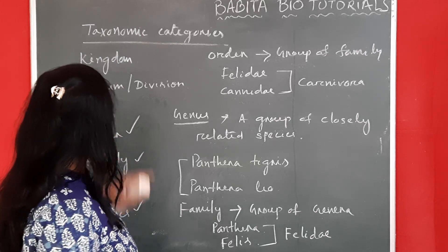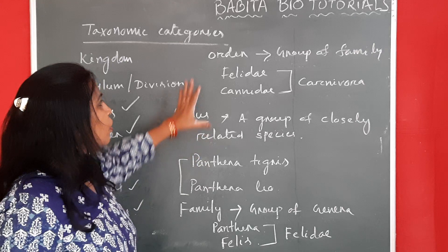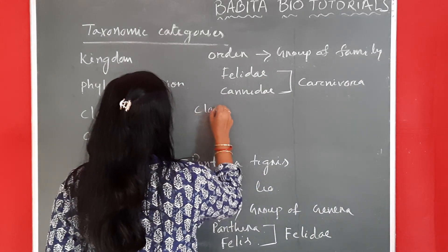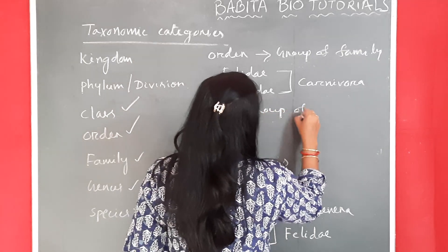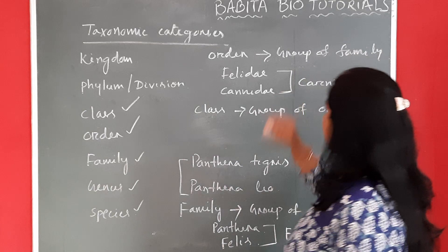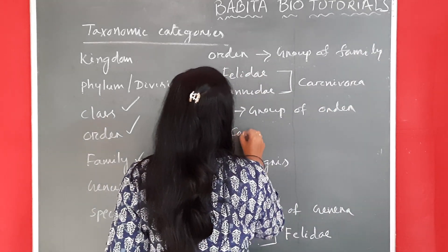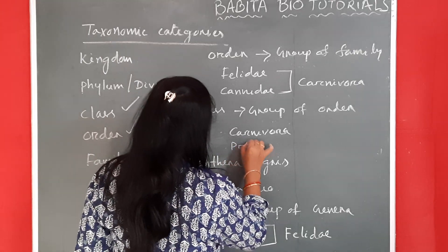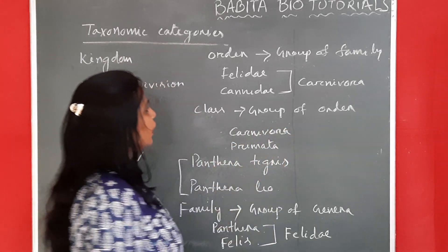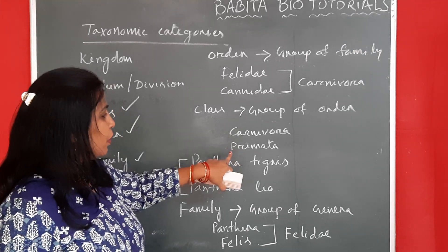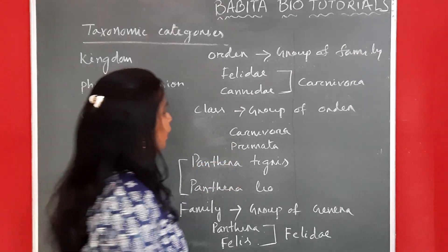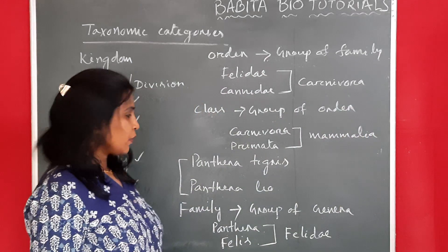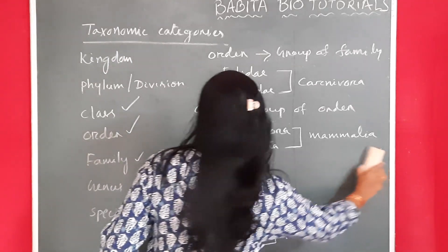Next, we will go for your class. Class is the same way — a group of closely related orders that belong to one class. Carnivora is one order. Primates — all primates belong to your Primates order. And they belong to the class Mammalia.